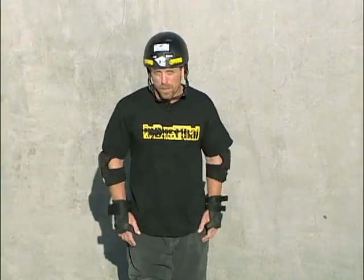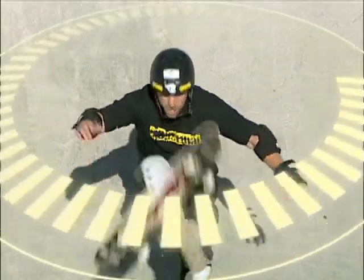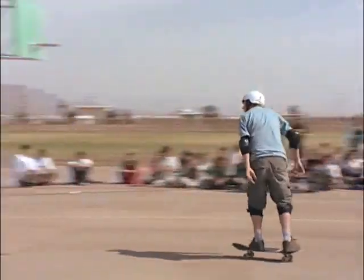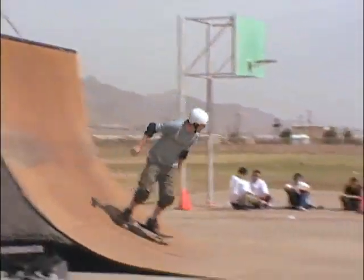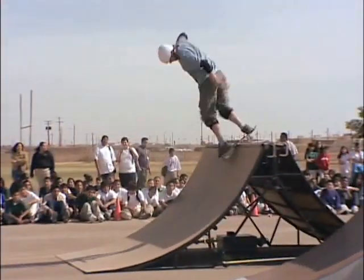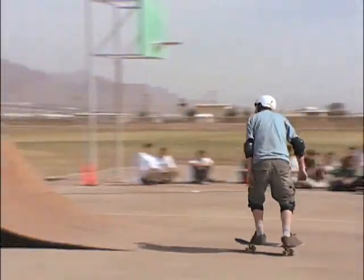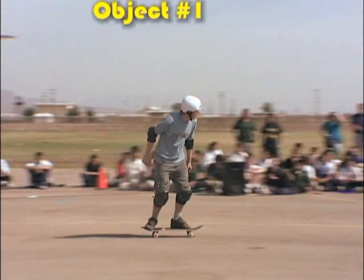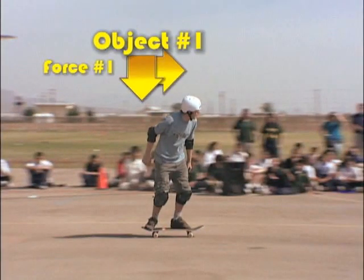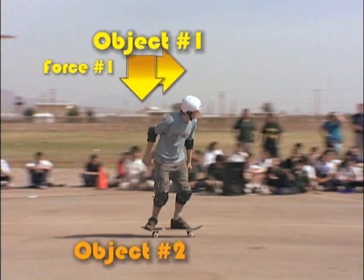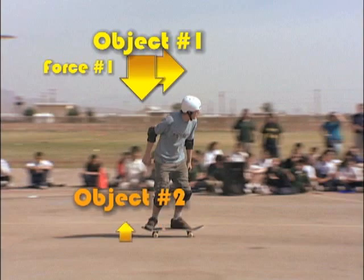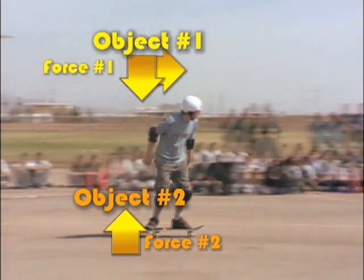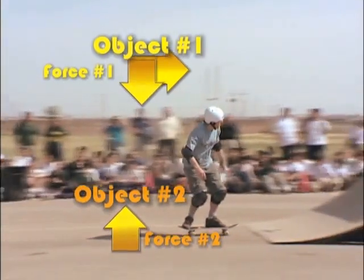How would this work in skateboarding? It works in exactly the same way. In this video clip, you can see a skateboarder riding a ramp. Can you identify the forces and the objects? In this case, the skateboarder — the first object — is pushing on the ground, which produces a force, force one, as he moves towards the ramp. At the same time, the ground itself — object two — produces an equal force, force two, in the opposite direction. That means the rider moves forward.